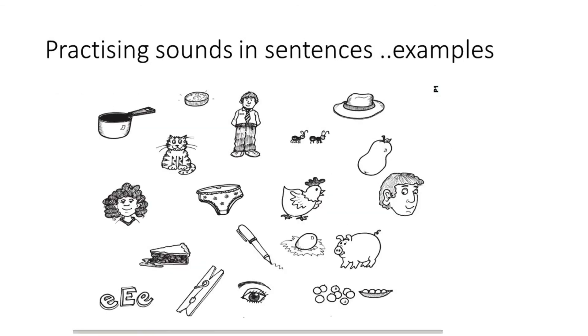The next step up is practising sounds in sentences, so the child practises their new sound — for example P — in simple instructions such as 'can you colour the pink pig?' Hopefully today we've given you a few ideas and resources to support your children and young people with active listening and barrier games.